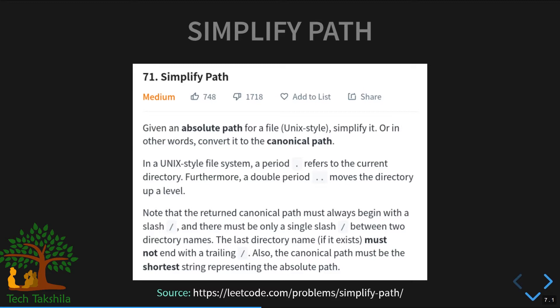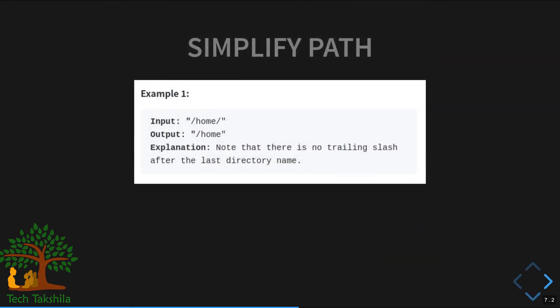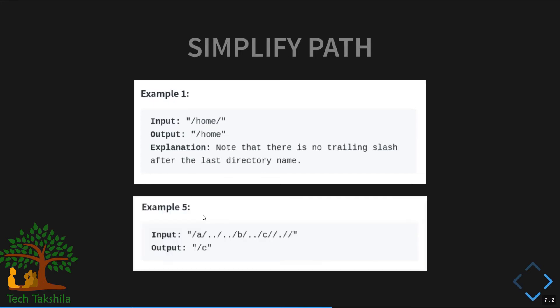Let's look at some examples. For the first example, the input is '/home/' — the trailing slash is superfluous and can be ignored, so the output is '/home'. The first slash is important because it tells us this path starts from root in a UNIX file system, but the trailing slash has no meaning.